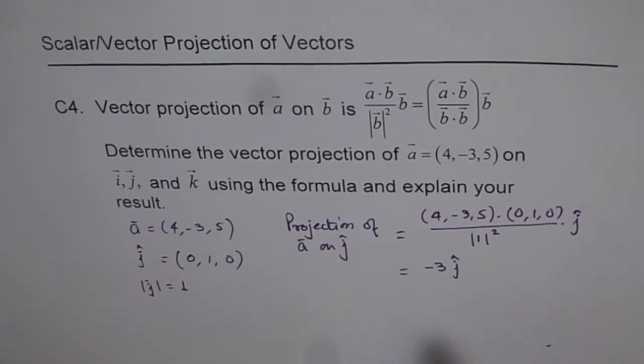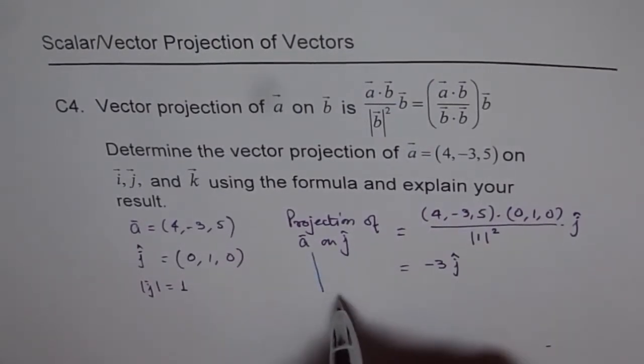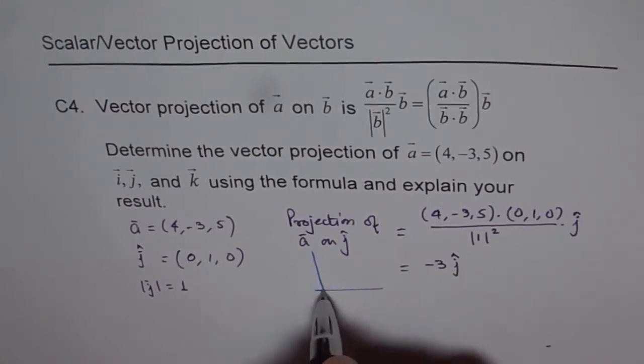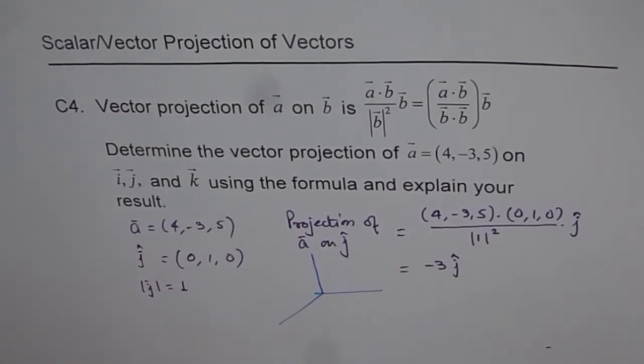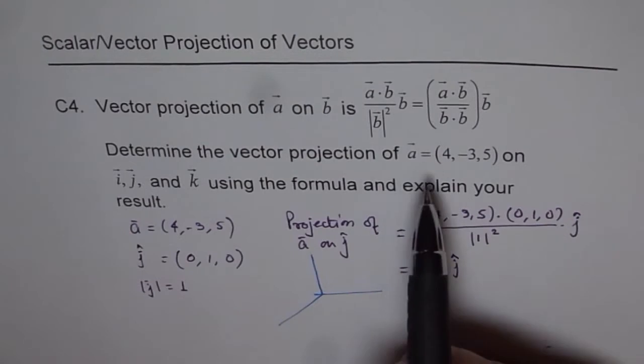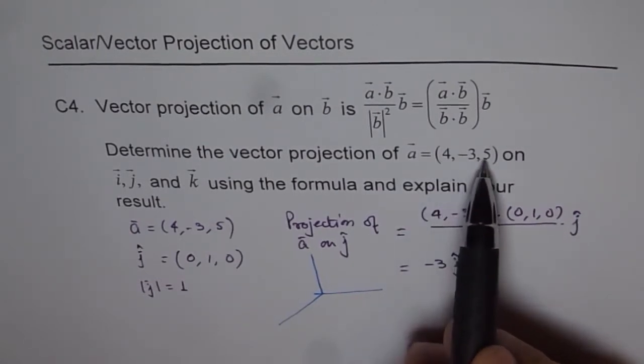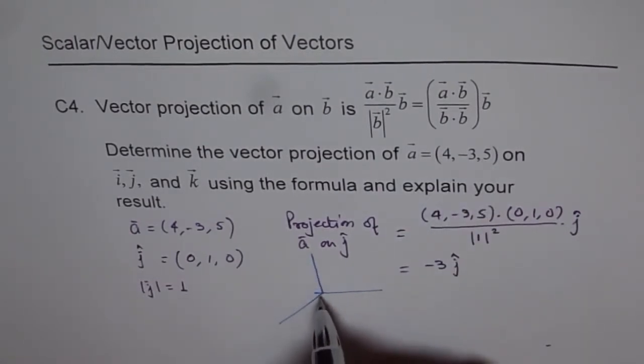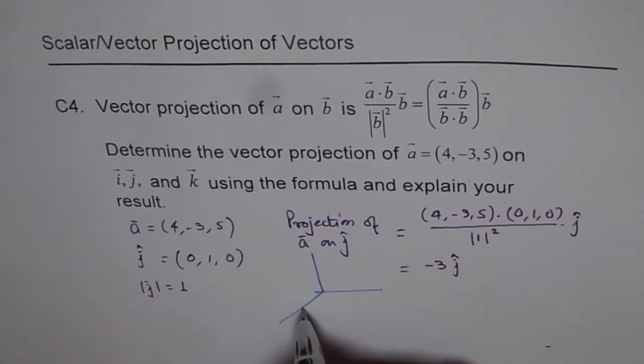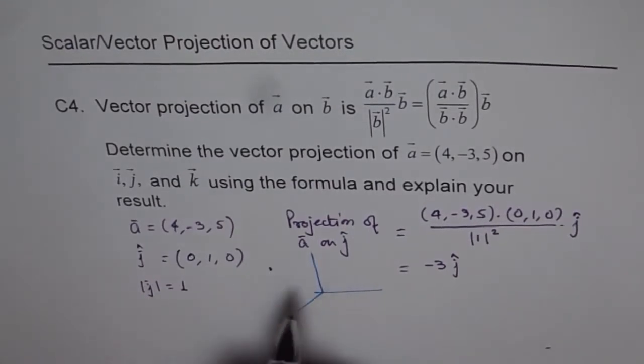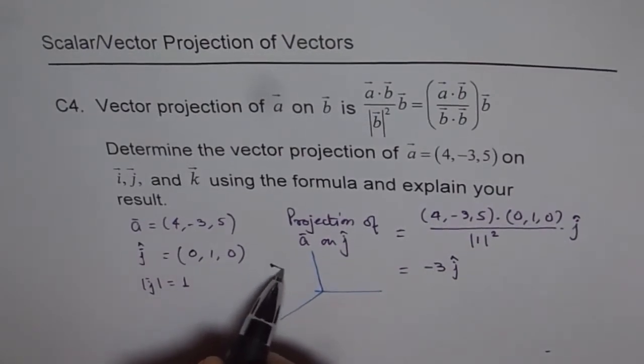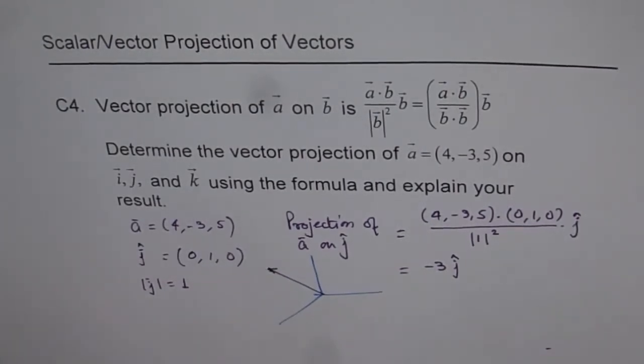We can explain it in a way that - let me just sketch it for you. That could provide some explanation here. If we have a vector which is (4, -3, 5), let's try to sketch it. So 4 units this side, minus 3 units this side, and 5 there. So we get a vector somewhere here. That's the vector. This is the vector we are talking about.